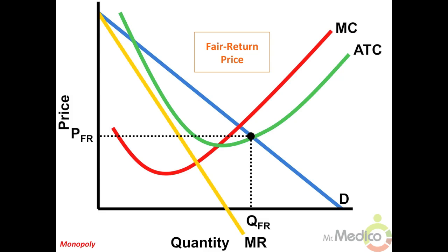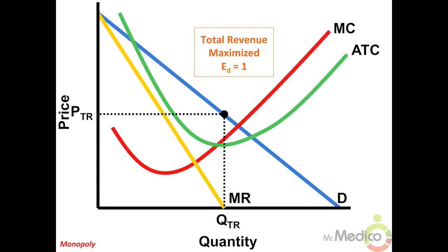Total revenue maximization: the monopolist will maximize total revenue at a level of output where marginal revenue equals zero, Q-tr. The price above that point on the demand curve is P-tr, and the price elasticity of demand equals one — it's unit elastic.